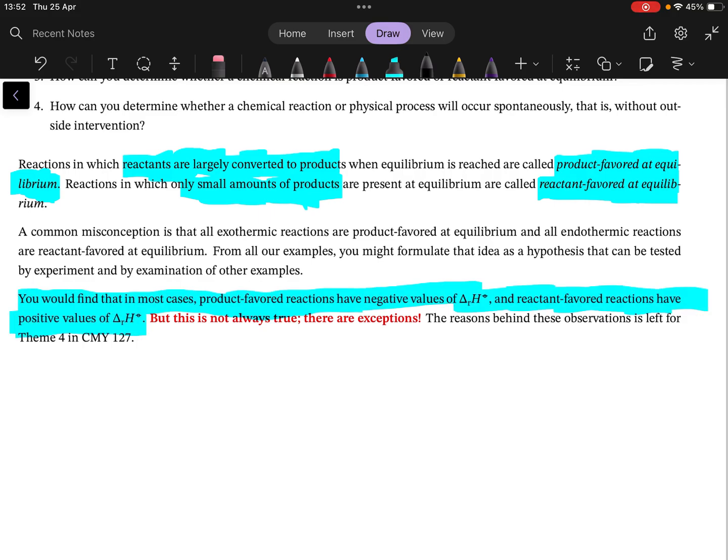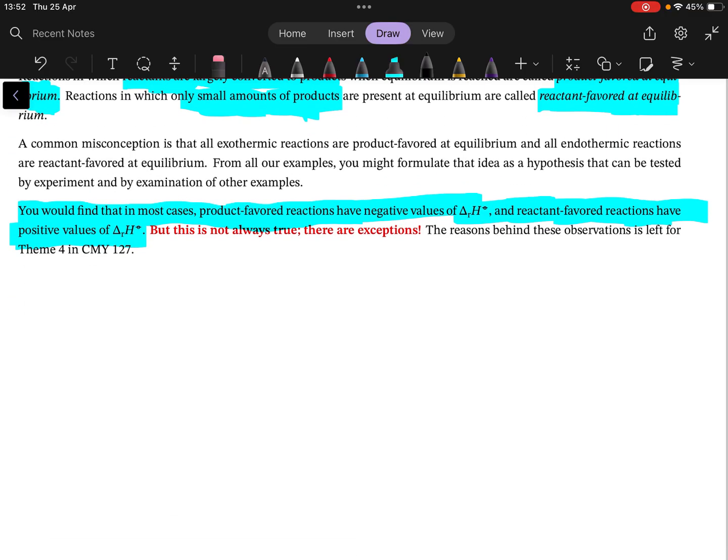Now though it is true in most cases you would find that product favored reactions have negative values and reactant favored values have positive values. In other words, most product favored are exothermic and most reactant favored are endothermic. But there are exceptions, and the reason there are exceptions is because delta H is not the full picture.